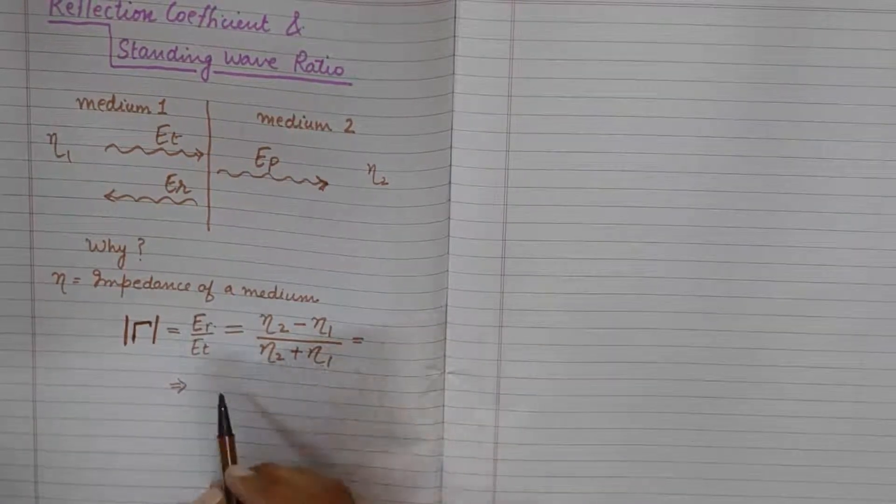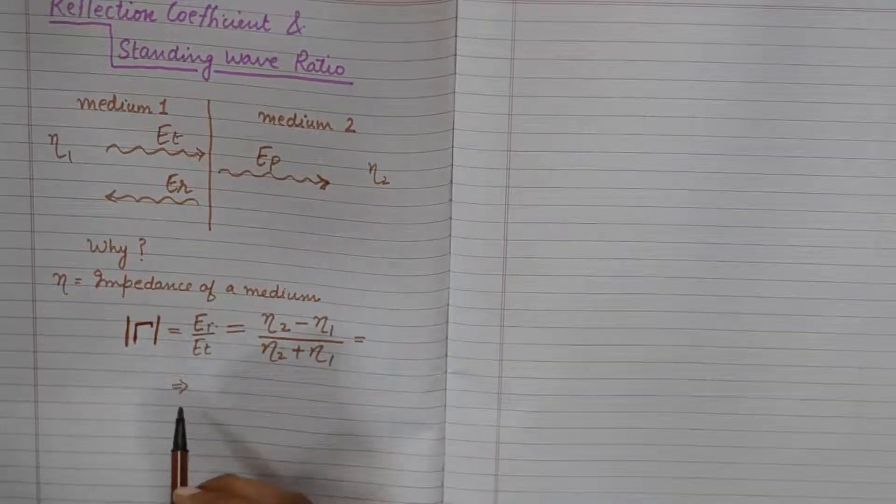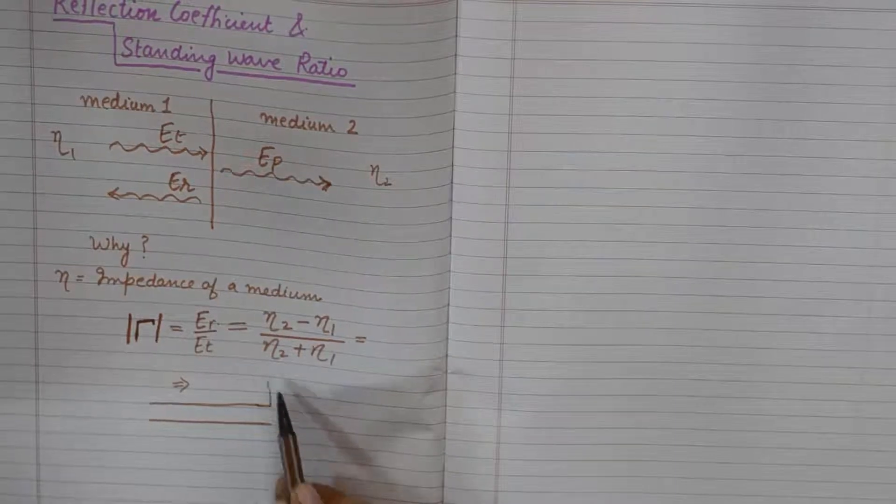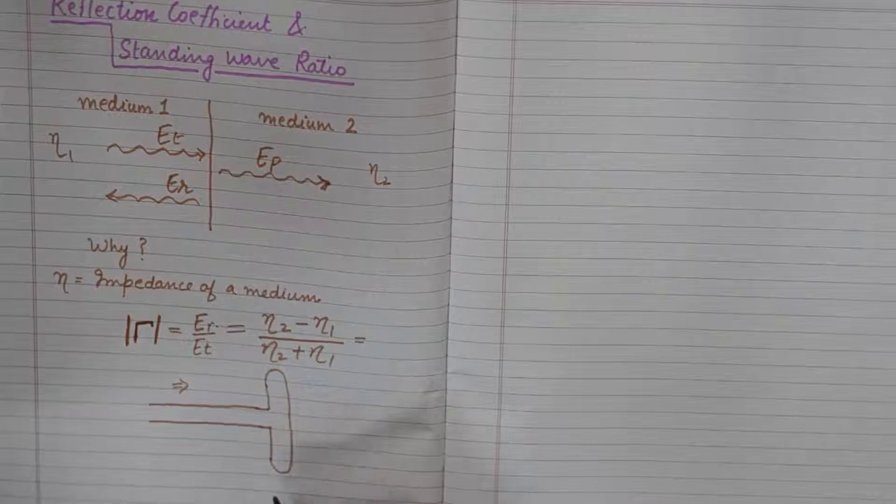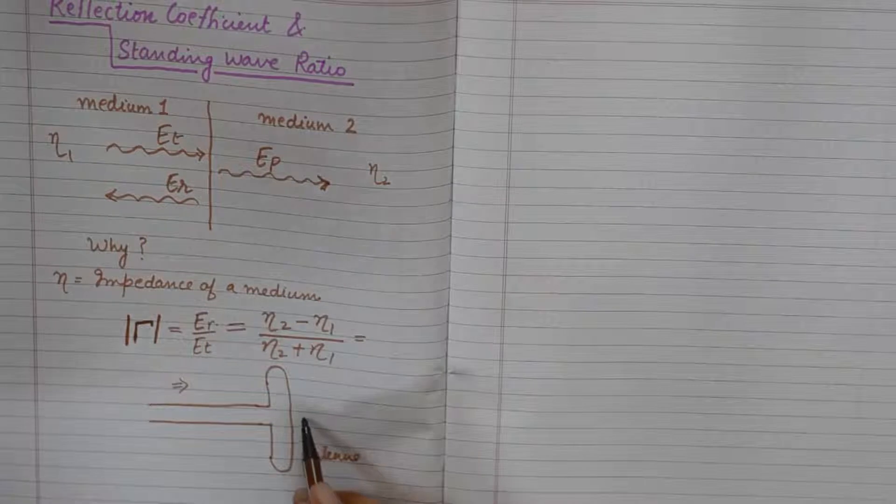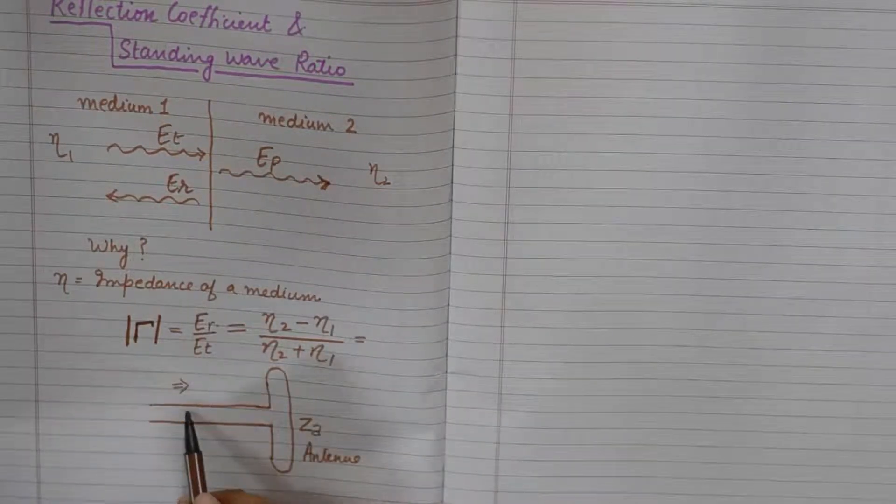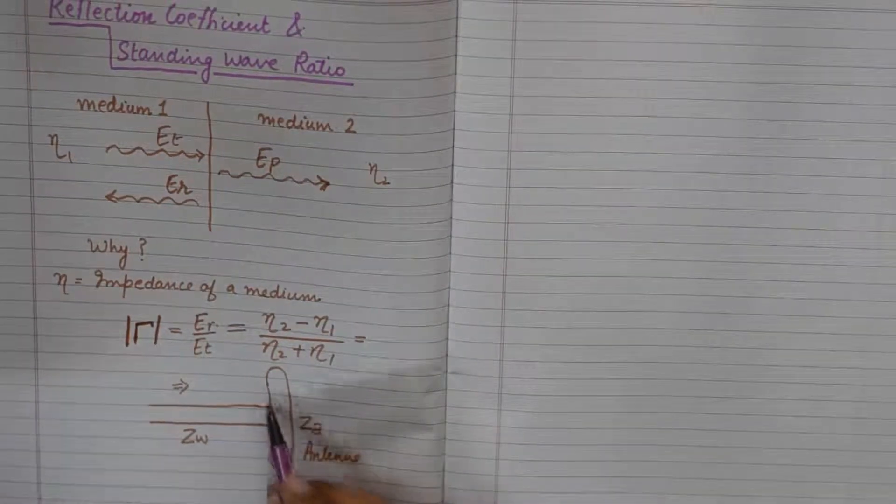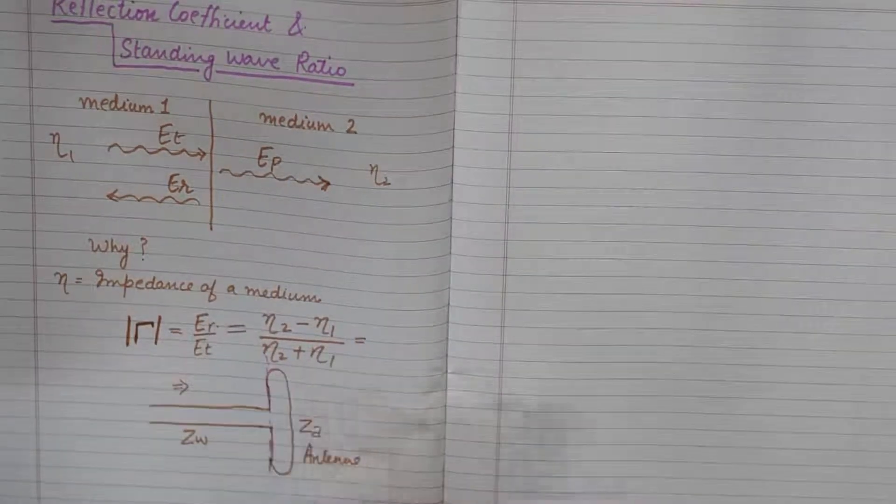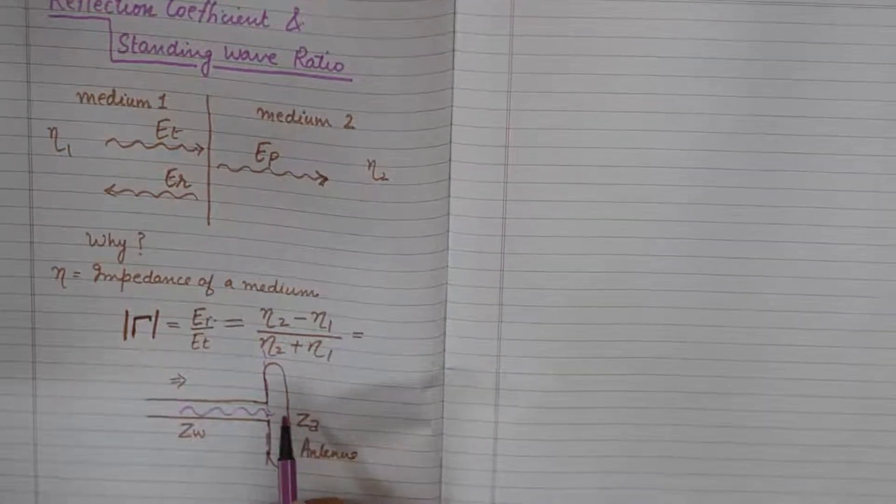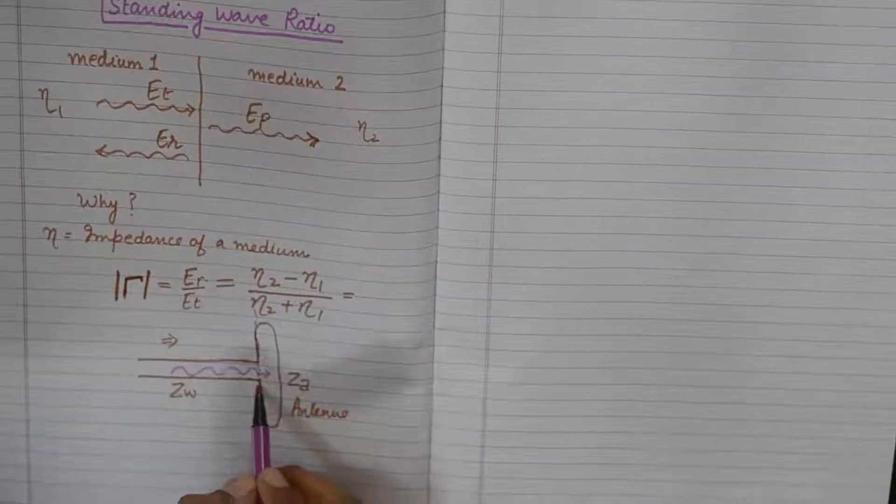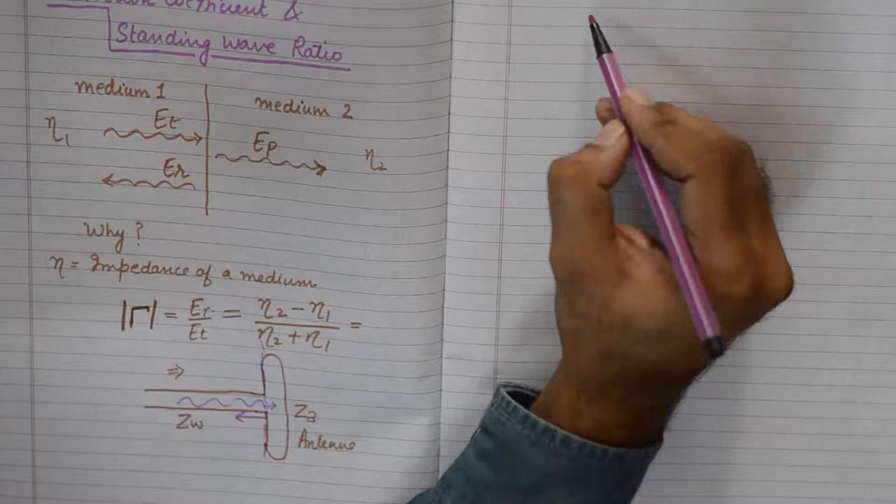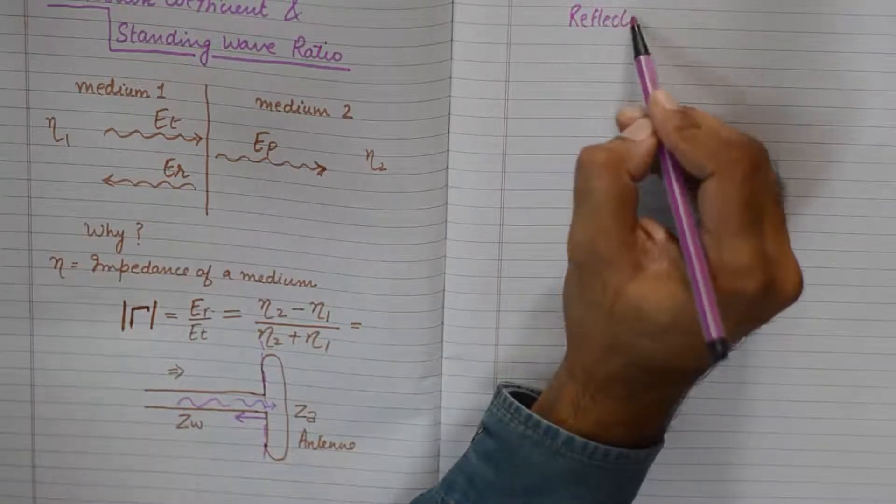So in terms of antennas, what we do is, we think of the waveguide carrying the signal to the antenna. For example, this is antenna with impedance ZA and this waveguide has impedance ZW. The point of interface of waveguide and antenna is the boundary. And when the signal is passed from the waveguide to the antenna, some part of it is reflected back into the transmitting system which is undesirable obviously.